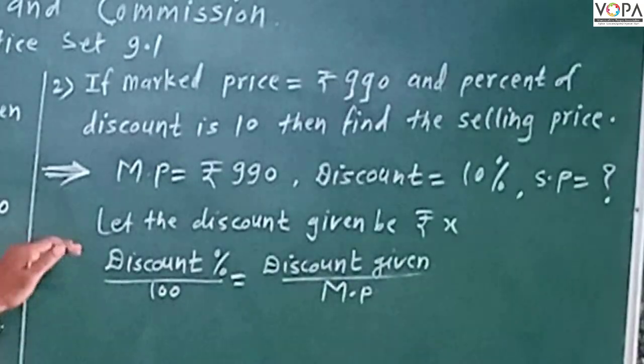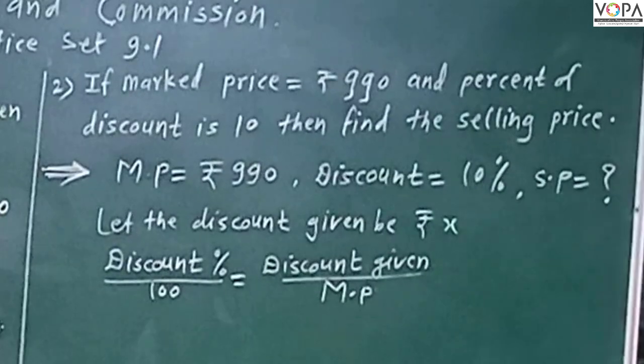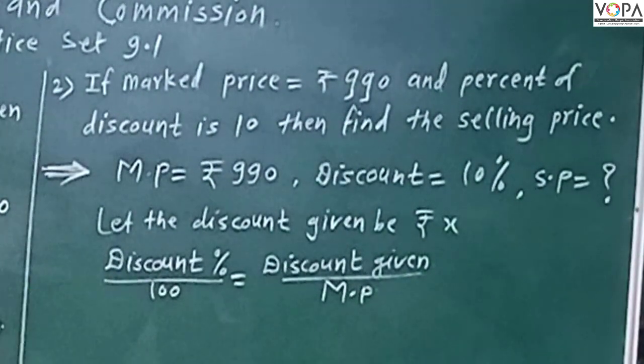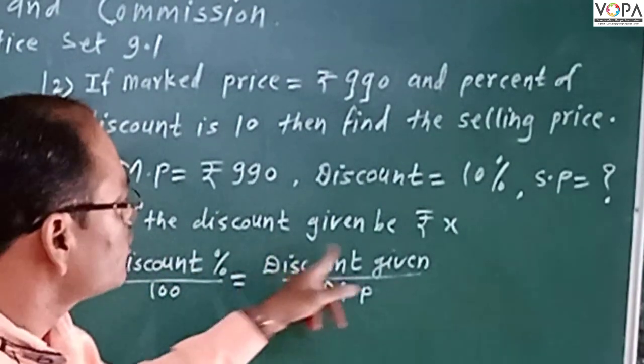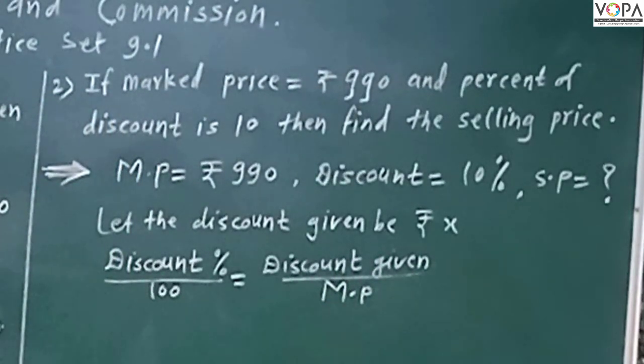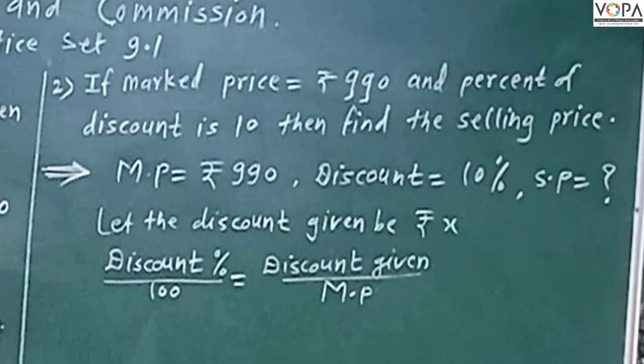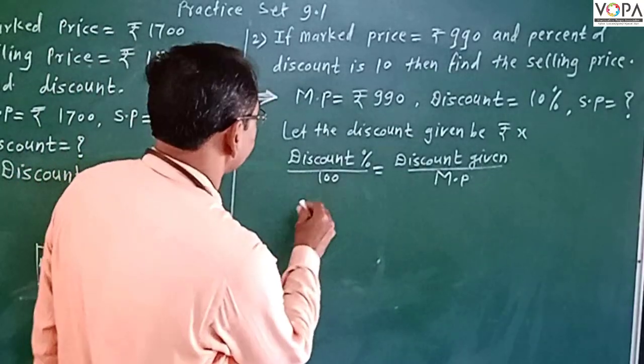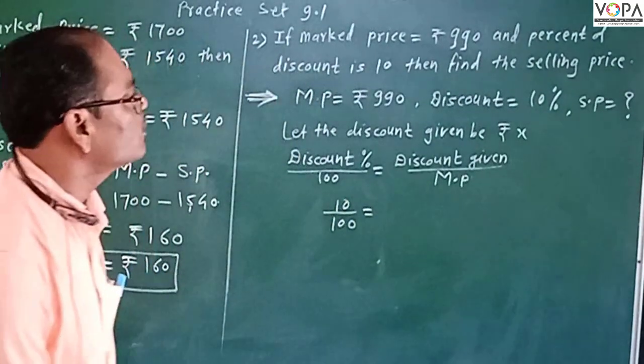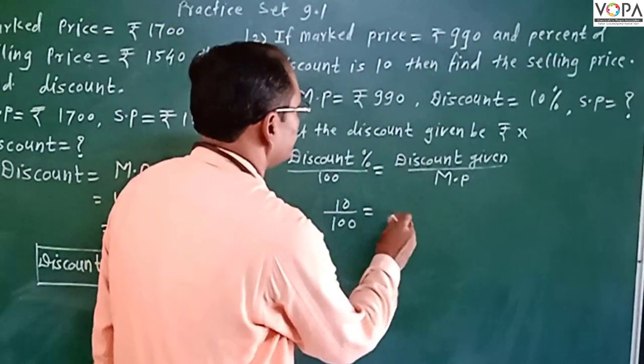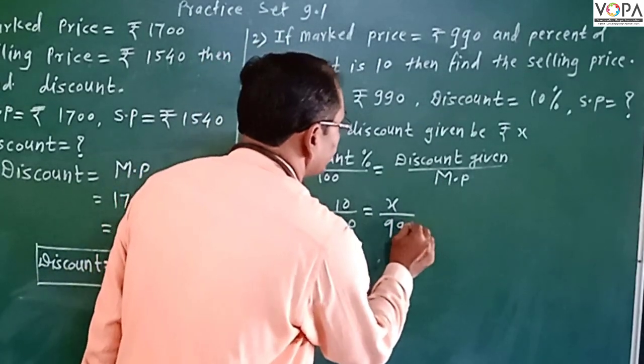Let the discount given be ₹X. So, discount percent upon 100 equals to discount given upon MP, marked price. Discount percent is 10 upon 100 equals to discount given upon marked price, that is ₹990.